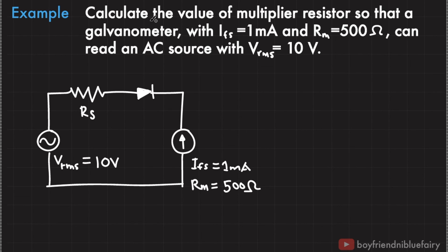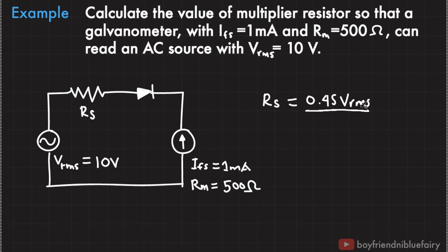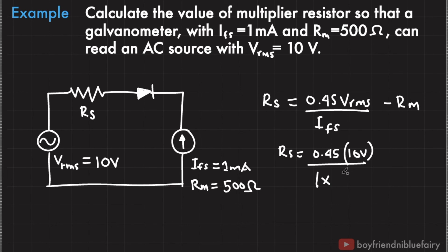As an example: calculate the value of the multiplier resistor so that a galvanometer with full scale deflection current of 1 milliamp and internal resistance of 500 ohms can read an AC source with RMS voltage of 10 volts. Using the equation R sub S equals (0.45 times V RMS divided by I sub FS) minus R sub M: R sub S equals (0.45 times 10 volts divided by 1 milliamp) minus 500 ohms, which results in R sub S equals 4,000 ohms.